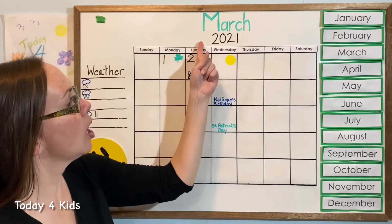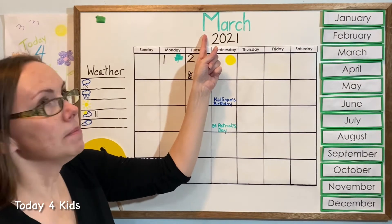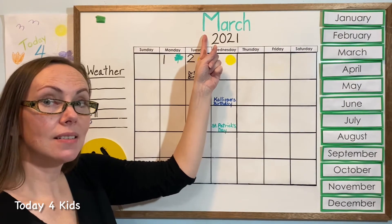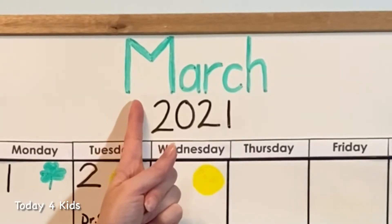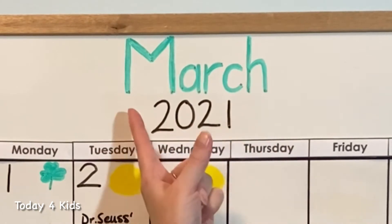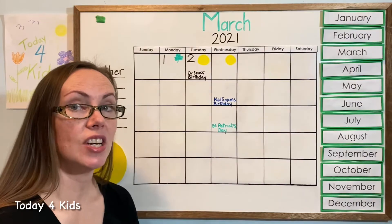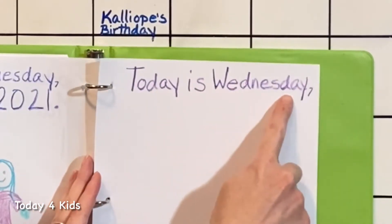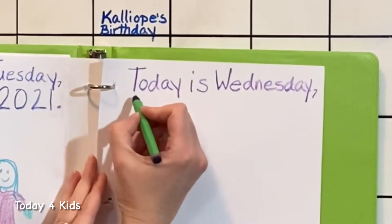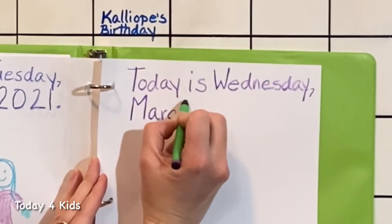And March begins with a capital M. And M sounds like maybe. Muscles. M. So capital M, A, R, C, H. March — that's just one syllable. March. So now we can put our month into our sentence in our agenda. Today is Wednesday, comma, and we've run out of room, so we're going to come down and come back to the beginning. And then we will put March — capital M because it's the name of our month — A, R, C, H.